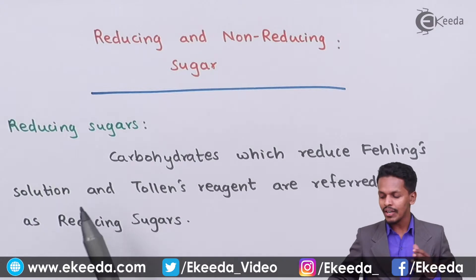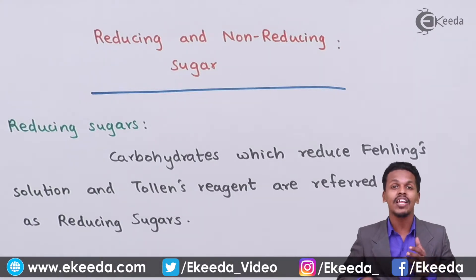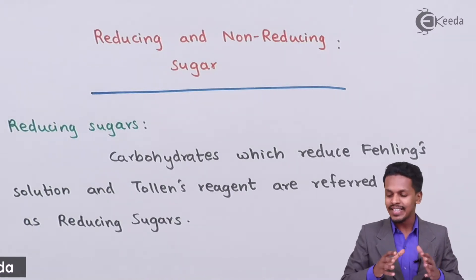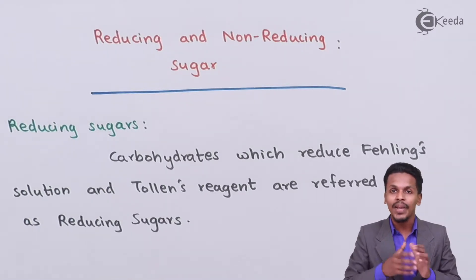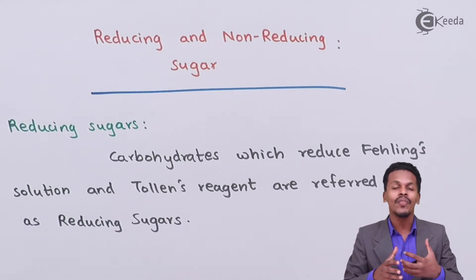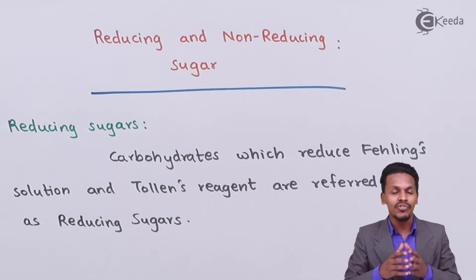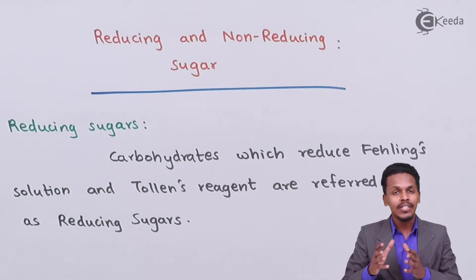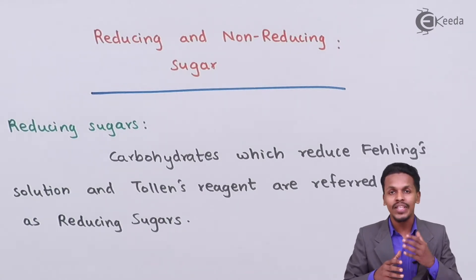Fehling's solution and Tollens' reagent are used to detect whether a particular aldehyde group is present or not. Similarly, reducing sugars play a vital role in deciding whether a sugar can reduce Fehling's solution or Tollens' reagent. Let me explain why and how these sugars give a positive test for Fehling's solution and Tollens' reagent.